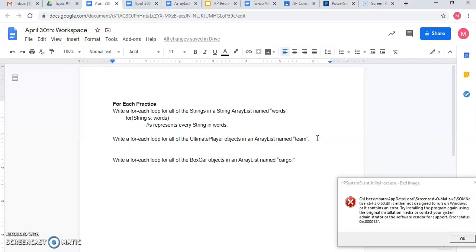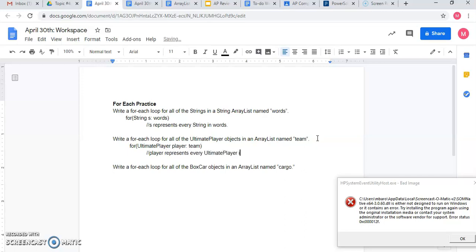Write a for each loop for all of the ultimate player objects in an ArrayList named team. The type of this ArrayList is ultimate player. Sound familiar? Maybe I'll just use the word player so I can be reminded that it's a player there. Colon in my ArrayList is named team. And now player represents every ultimate player object in team. I can write things like that position that you guys did in master coding assignment number three.